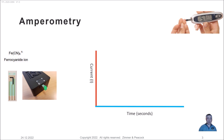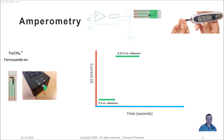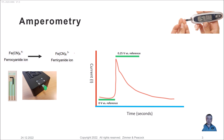In an amperometric experiment, the potential might step from something like 0 volts versus reference to something like 0.25 volts (250 millivolts) versus reference using a potentiostat circuit. At that point we get oxidation of ferrocyanide to ferricyanide, and the current jumps up — this is really a charging current — and then it relaxes.